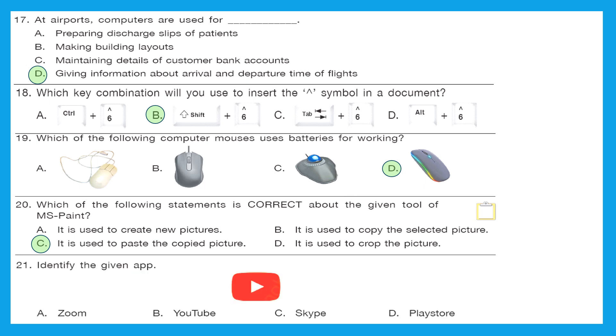Question 21: identify the given app. So just see the app symbol icon and tell me which app it is. It is the same app on which you are watching my video. It is YouTube symbol. So option B is the right answer, YouTube.